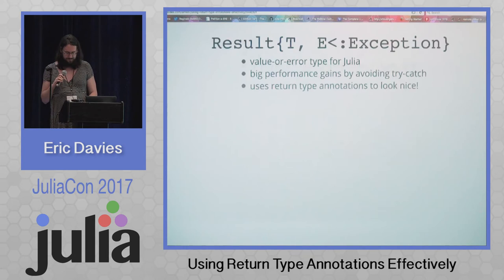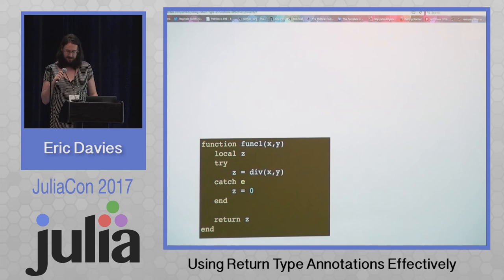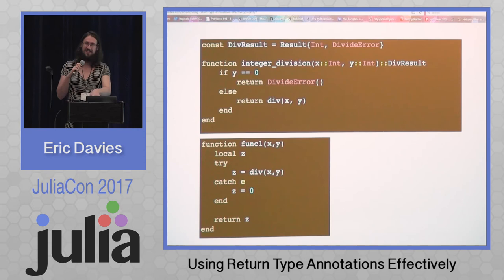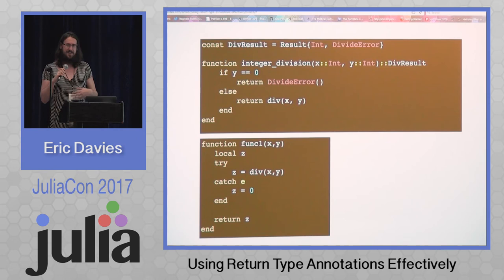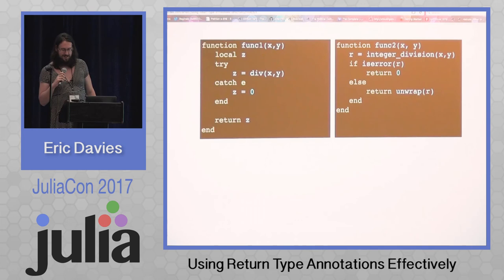Here's an example. Suppose we want a function that performs integer division but returns 0 when the divisor is 0 instead of throwing an error. We could just use a try-catch like this, or we could use ResultTypes. Here's a method that performs integer division but returns a result — DivResult is aliased to either an int or a DivideError, so it gives you the same information that div gives you but without throwing an error. Then we have a corresponding method func2 that does the same thing but uses ResultTypes instead of exceptions.